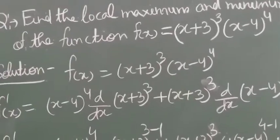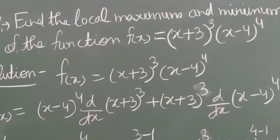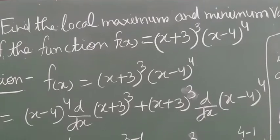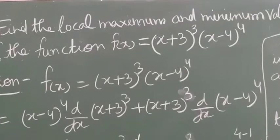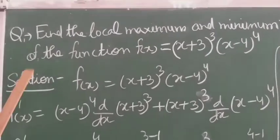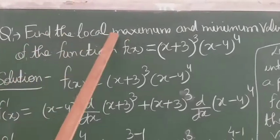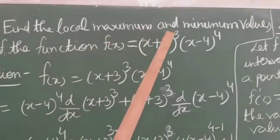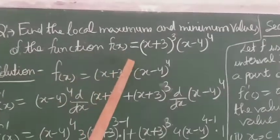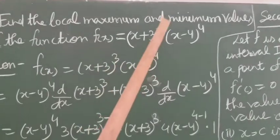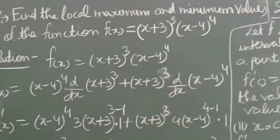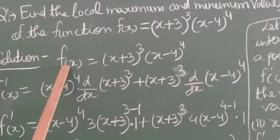Hello students. Let us solve more questions related to local maximum and local minimum value. The question is: find the local maximum and minimum value of the function f(x) = (x+3)³ · (x−4)⁴. So this is the function.